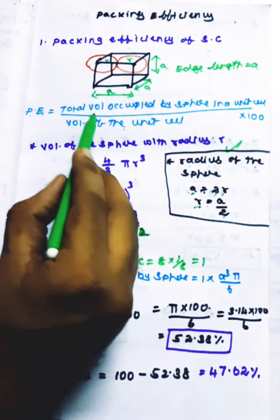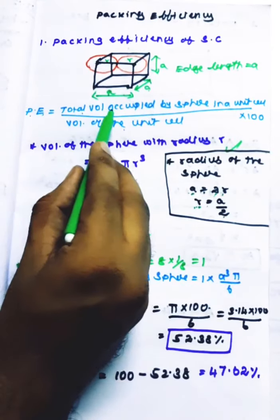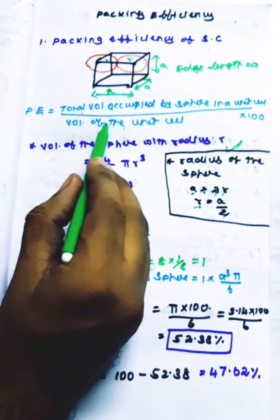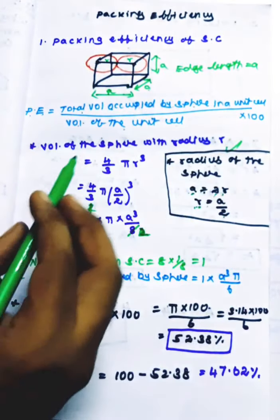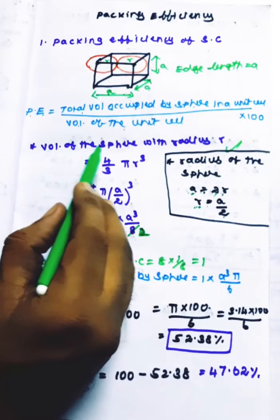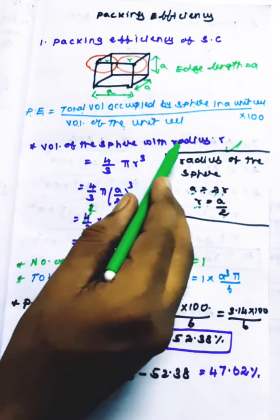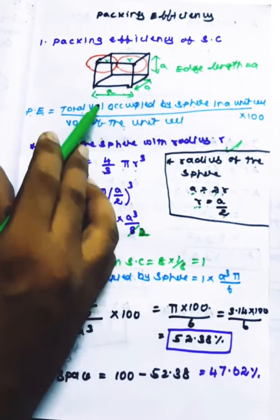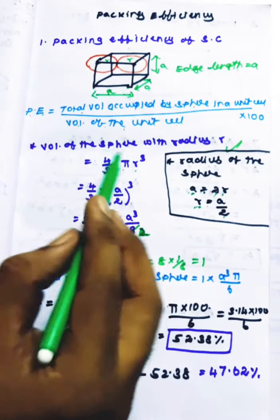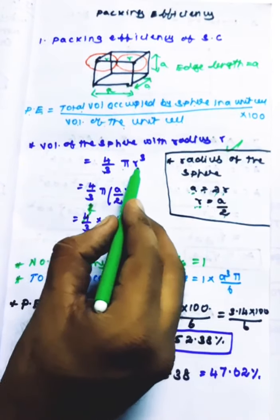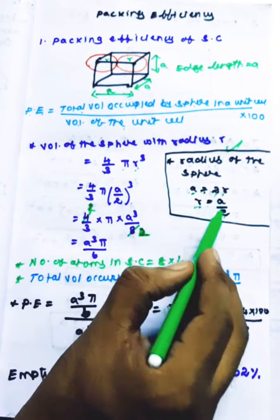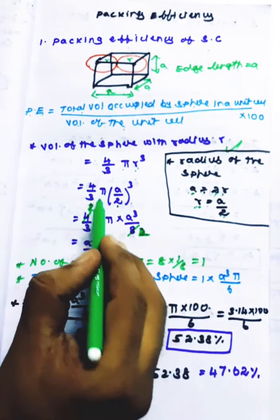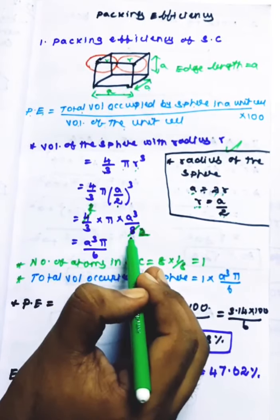Packing efficiency equals total volume occupied by the sphere in the unit cell, divided by volume of the unit cell, into 100. First, the volume of the sphere with radius r is 4/3 π r³. Substituting r = a/2, this becomes 4/3 π (a/2)³ = 4/3 π a³ divided by 8.